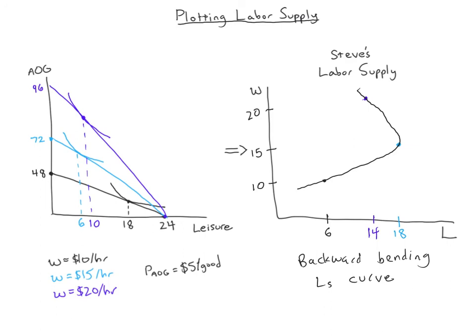This series covered three key skills. First, terminology to interpret and draw the labor-leisure diagram, knowing the slope of each budget constraint is the real wage w over p. Second, building the substitution effect and income effect table to understand the ambiguity in whether you work more or less as wages rise. Third, taking the optimal leisure choices from the left diagram and plotting the implied labor hours as a labor supply curve on the right. Thanks for watching — if you have any questions, feel free to email or text.